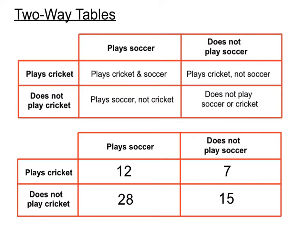We might do a survey of a school or a group of young people and ask them: do you play soccer, do you play cricket or not? These are the combinations in this particular survey, and the numbers will obviously be different depending on which people you ask.